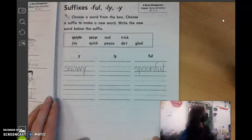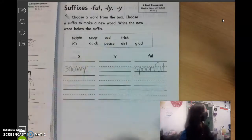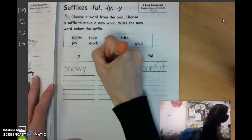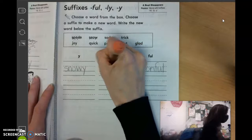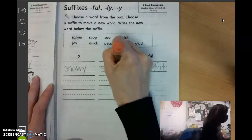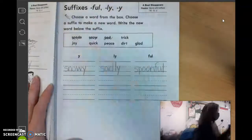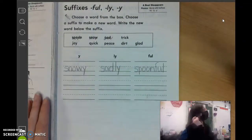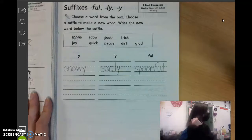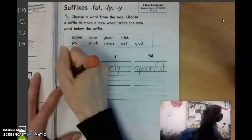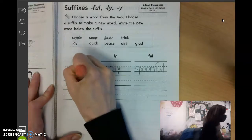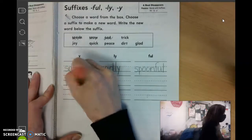What about sad? Parker? Sadly, just like the spelling word. S-A-D-L-Y. What about trick? Isabel? Why? Tricky, another spelling word. T-R-I-C-K-Y.